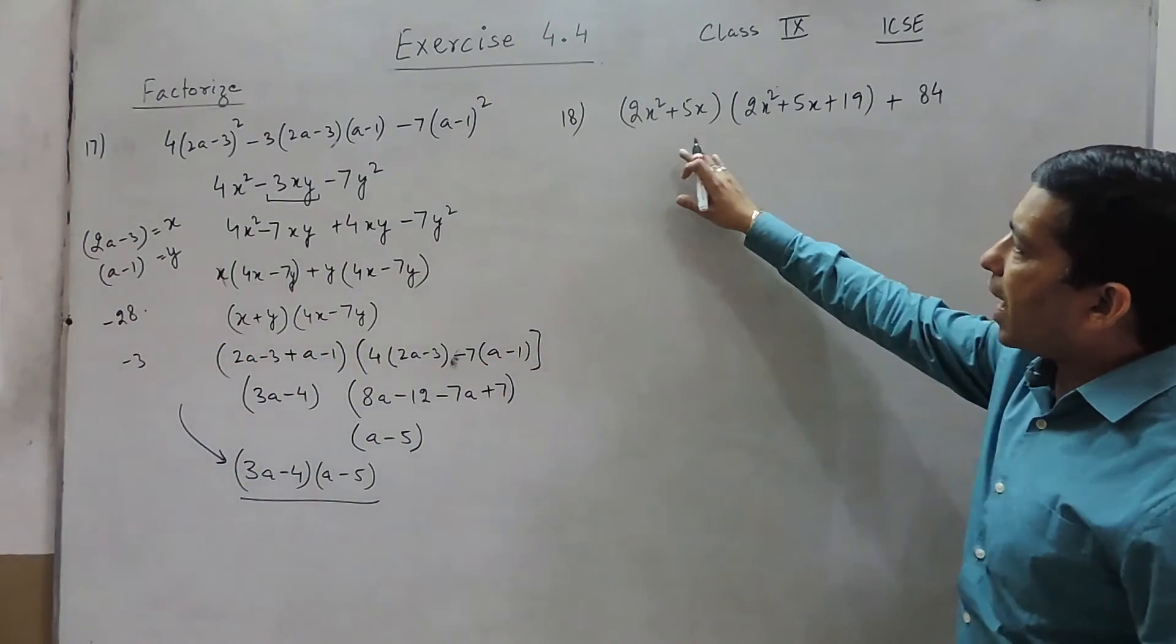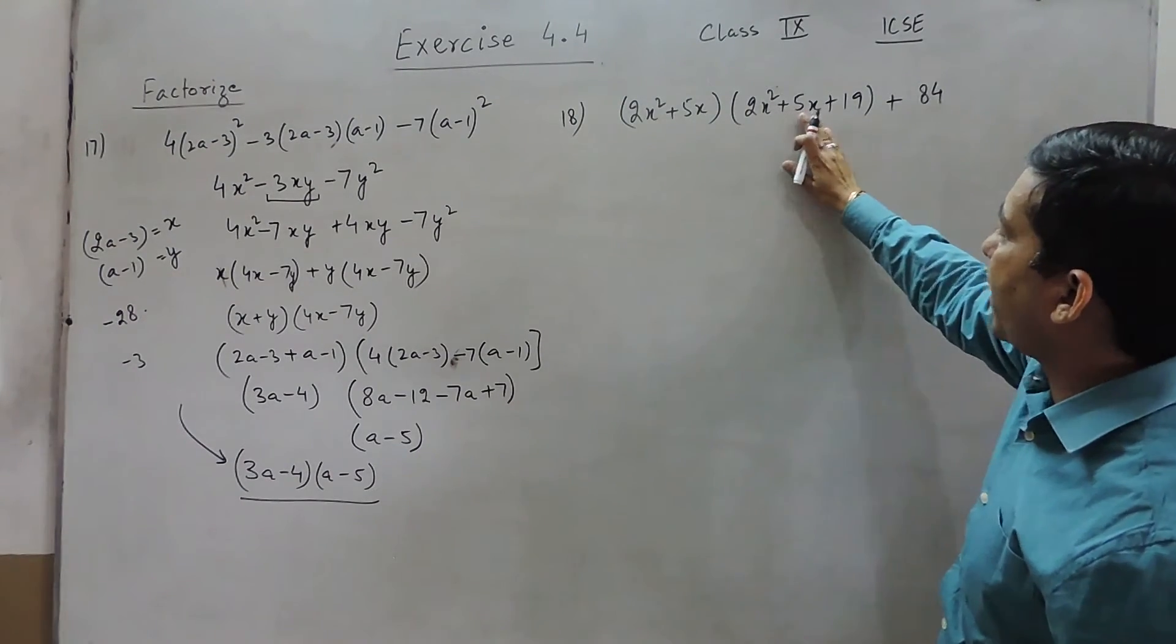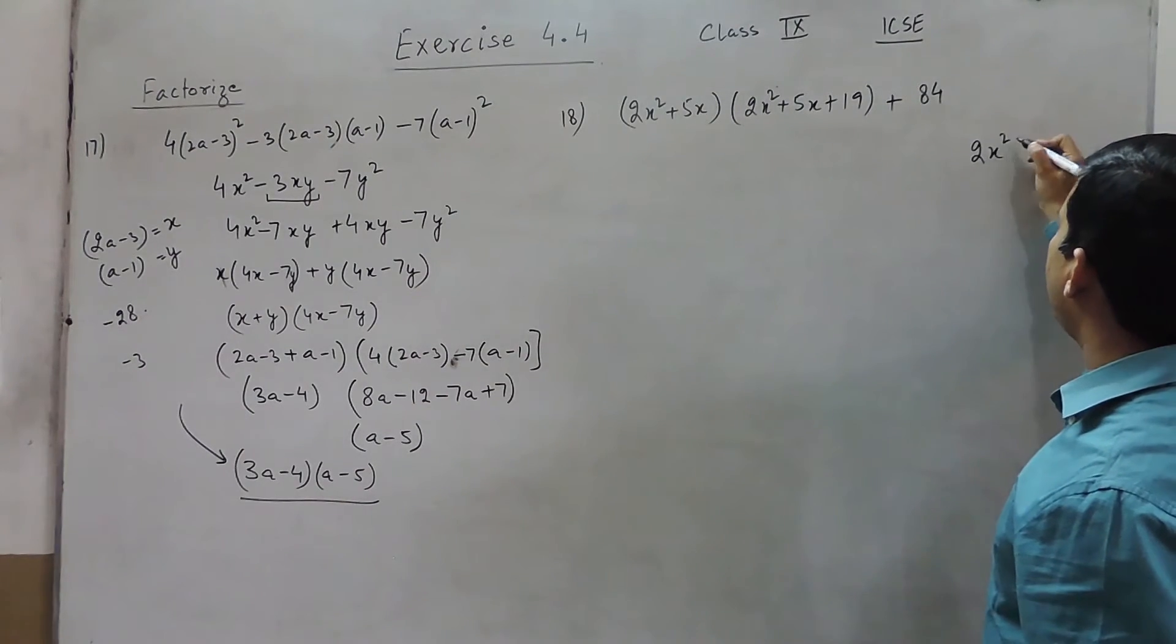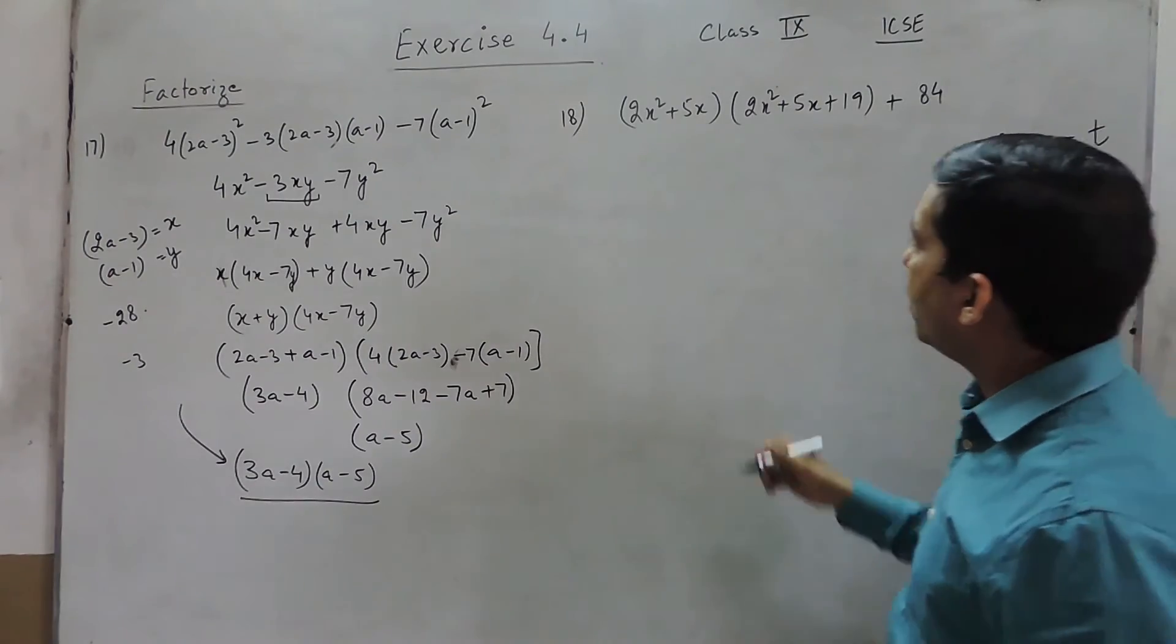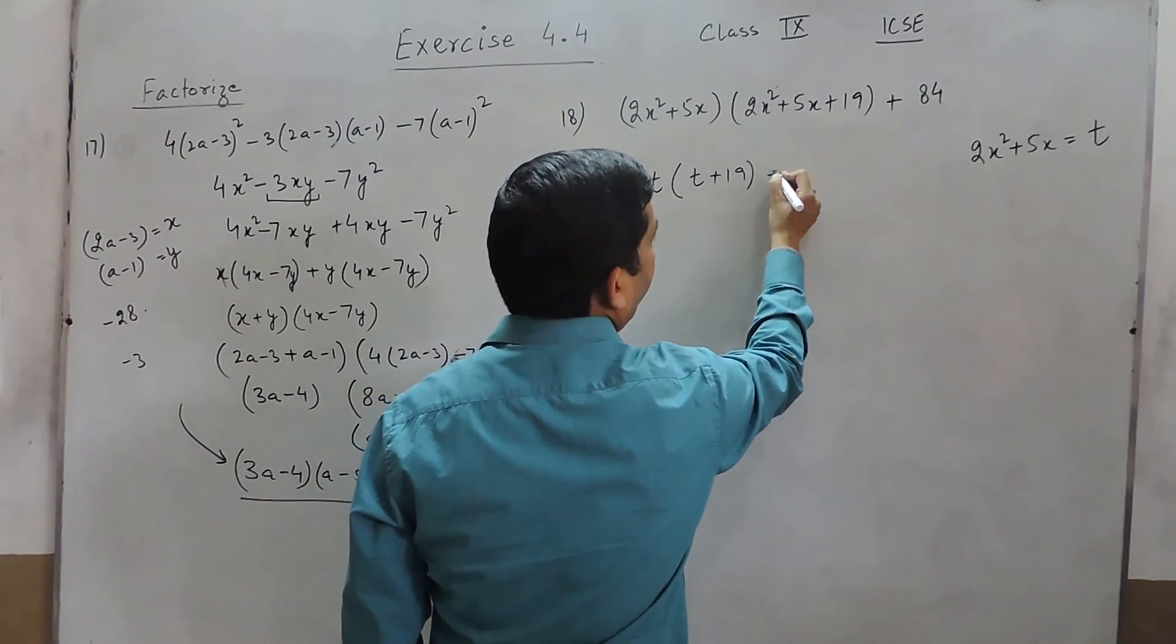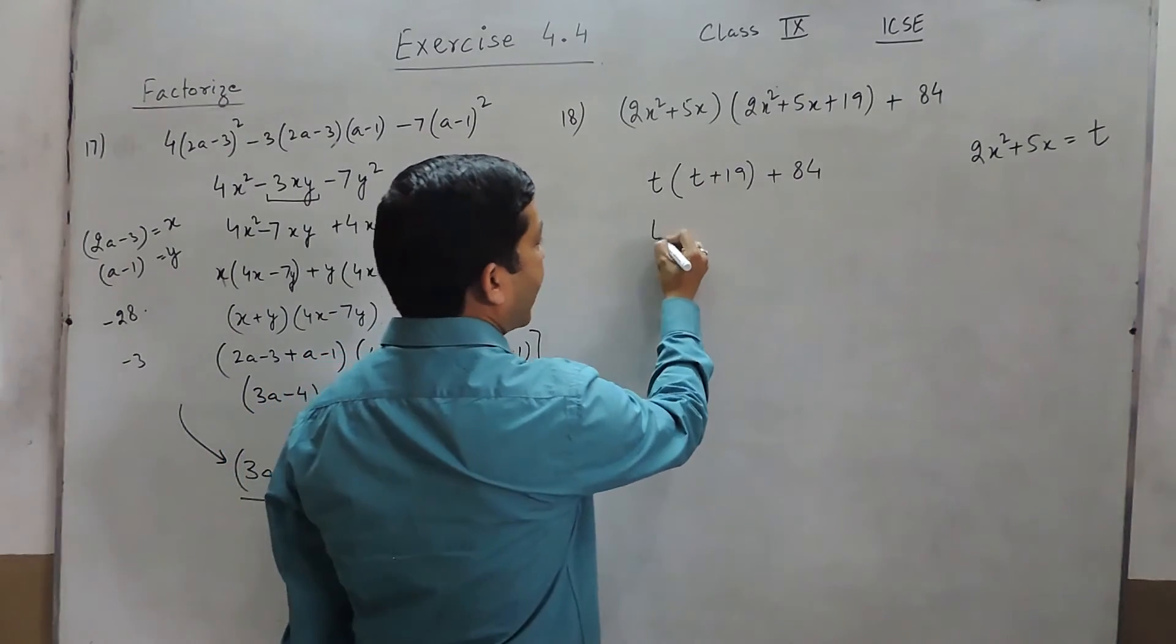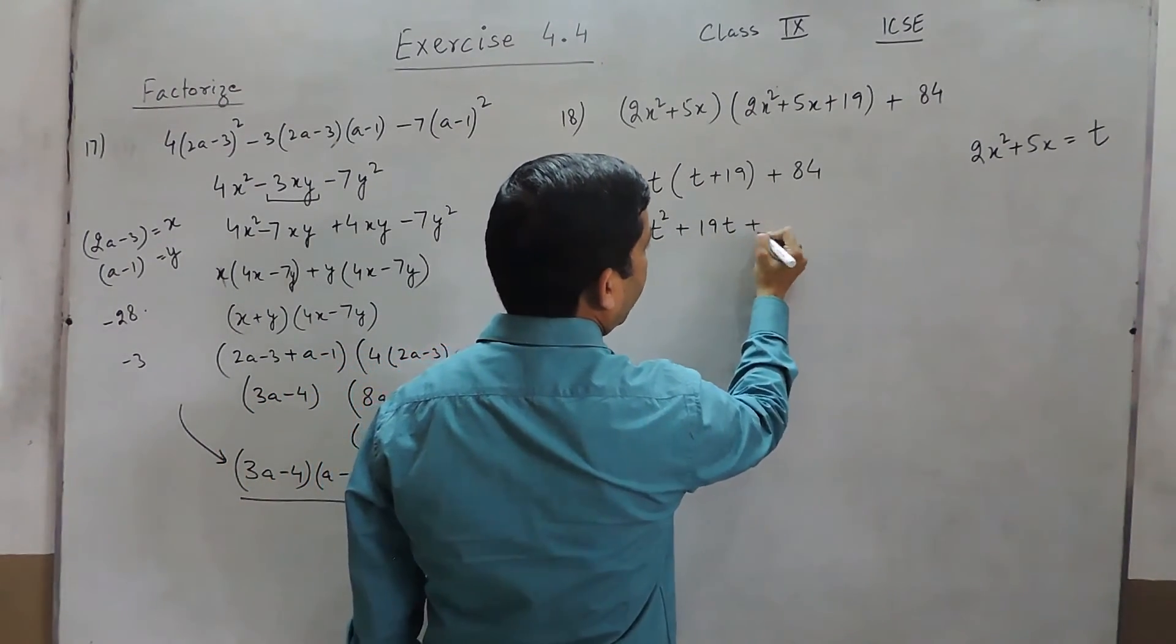Here also if I look at 2x² + 5x and here it is (2x² + 5x)(2x² + 5x + 19). Again if I put the value of 2x² + 5x as a variable t, so this can be written as t(t + 19) + 84. Or to this value I can write t² + 19t + 84.